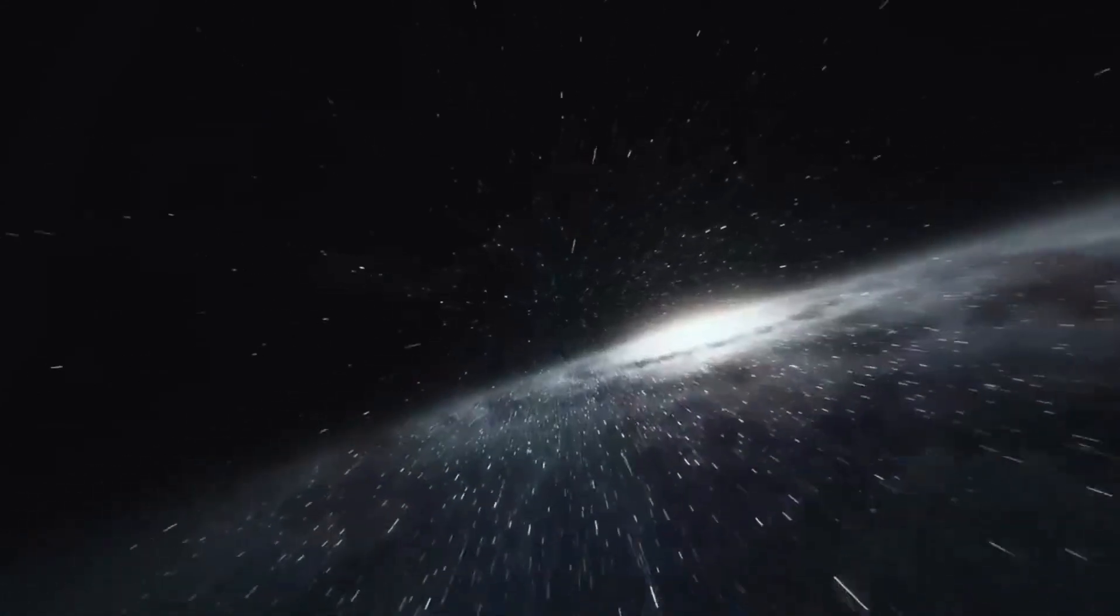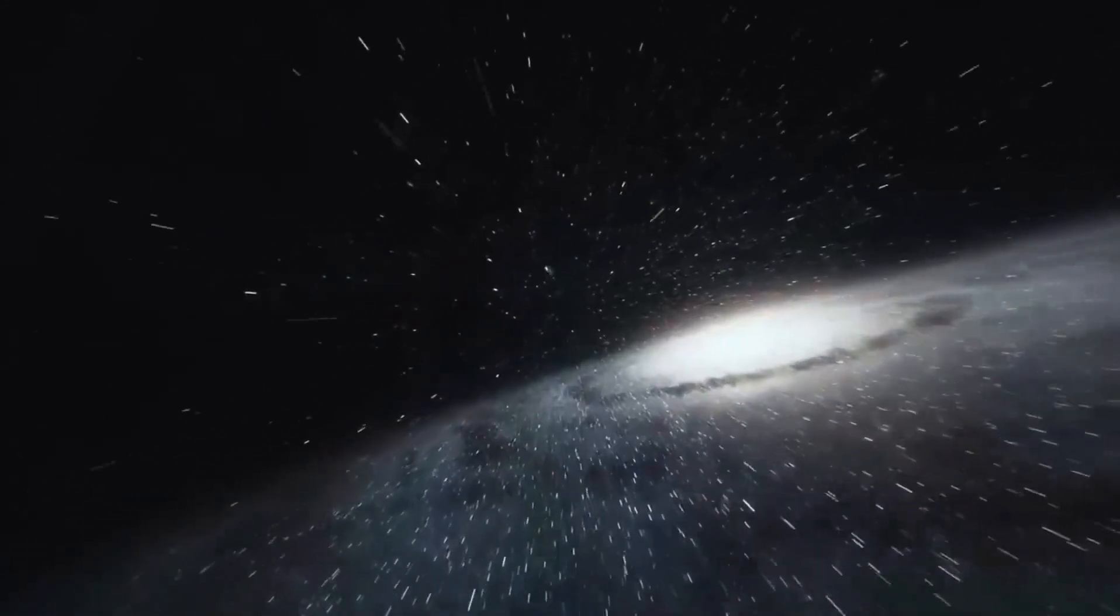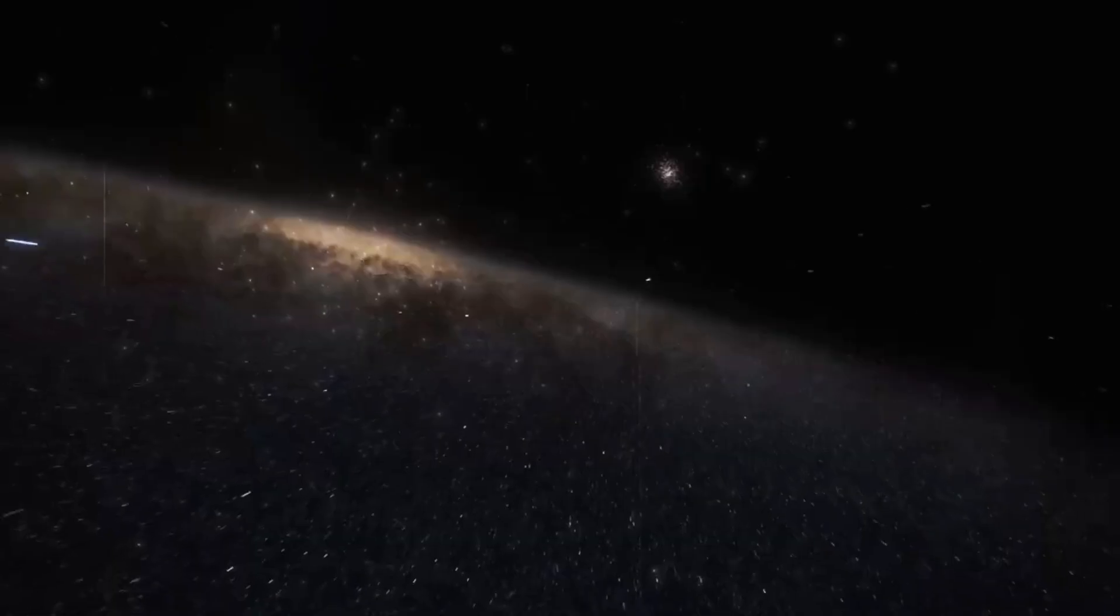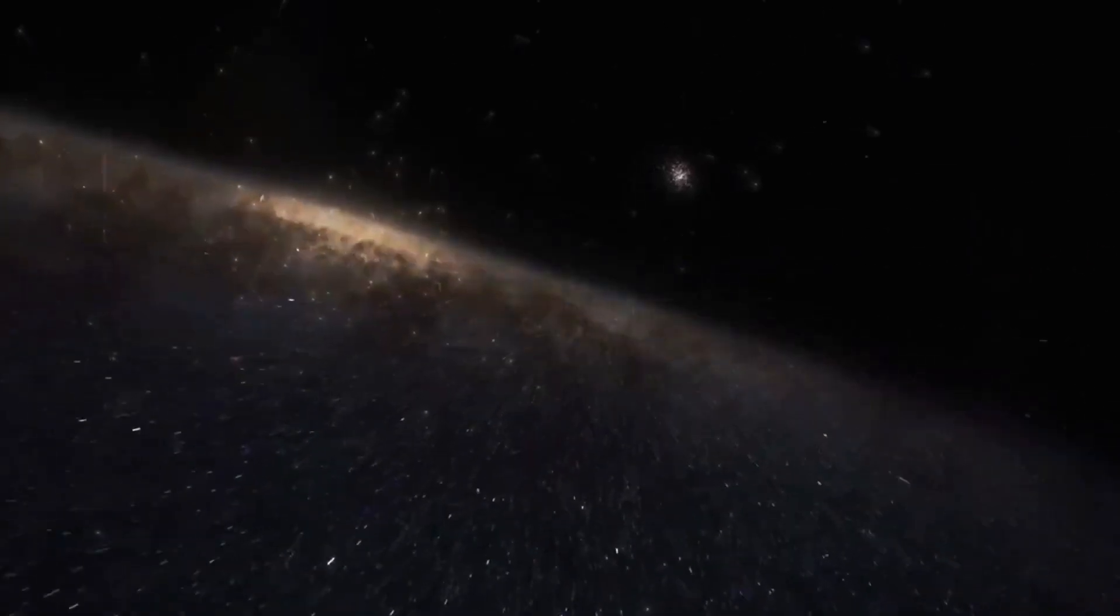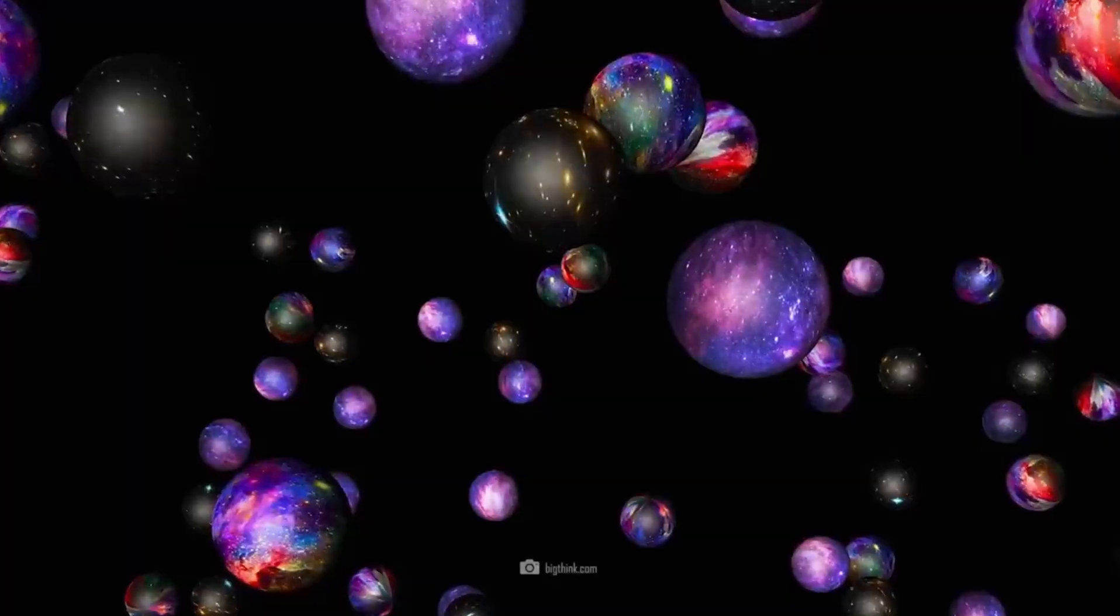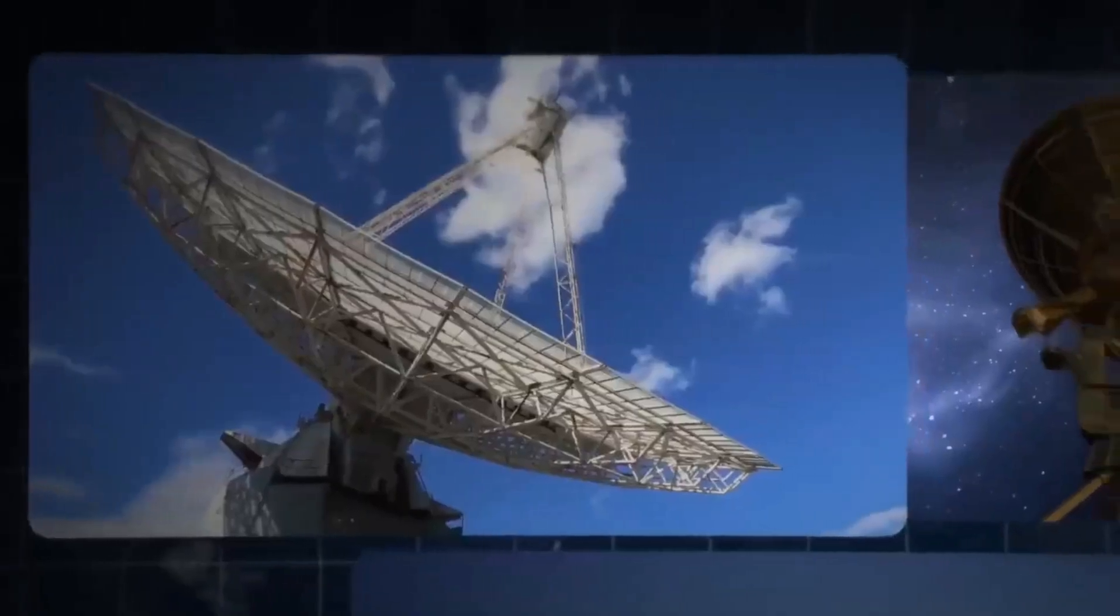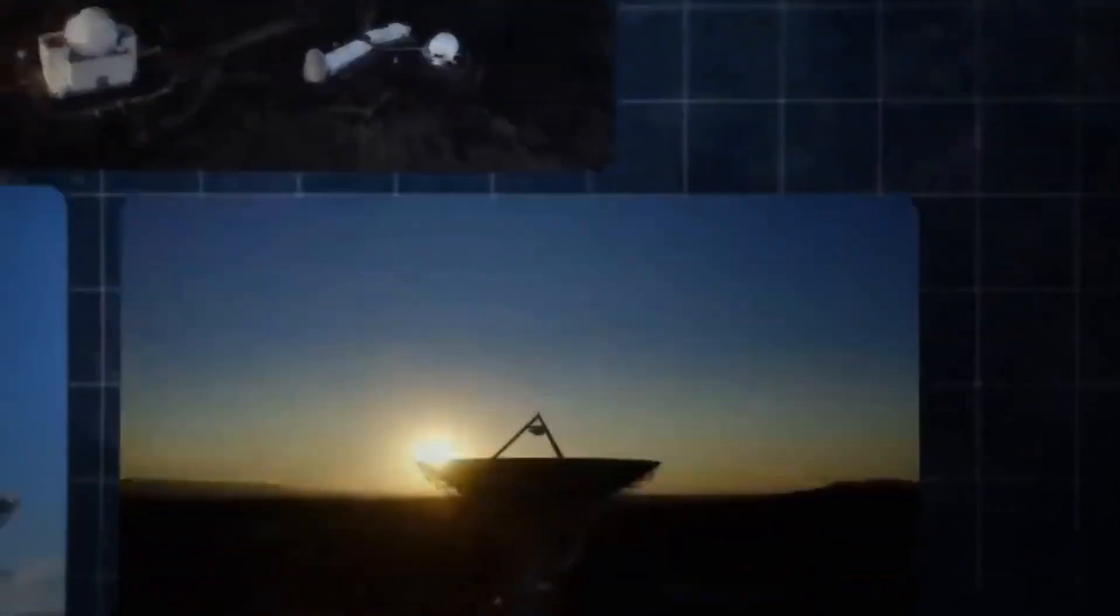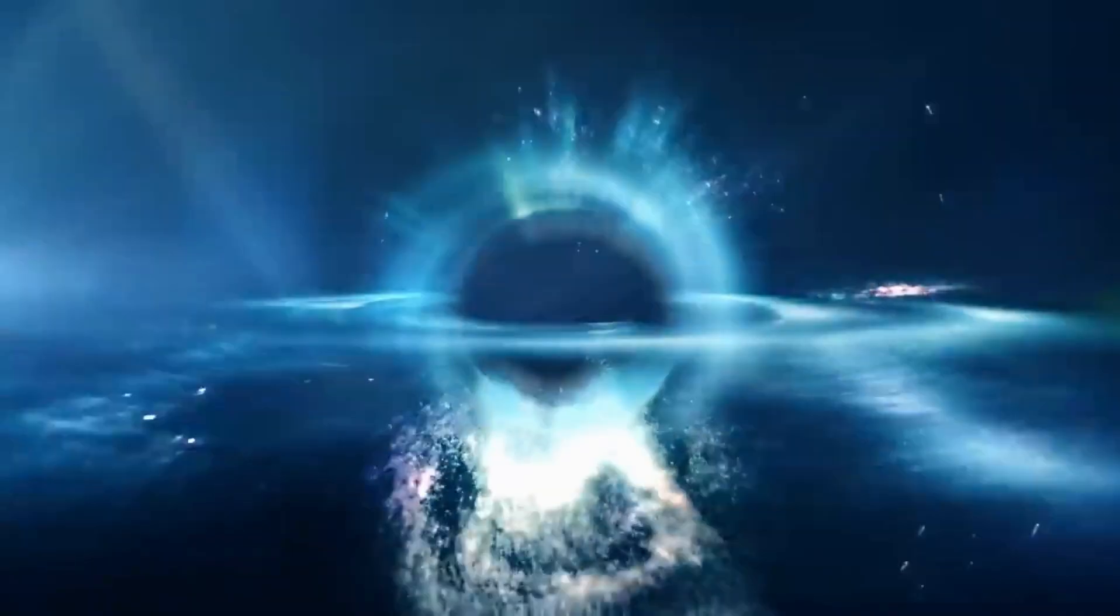Larger stars frequently burn through their hydrogen faster and die off sooner. Despite being only roughly 10 million years old, Betelgeuse is certainly nearing the end of its lifespan. Our sun, on the other hand, is still in its prime at approximately 5 billion years old. Furthermore, because Betelgeuse is nearing the end of its life, it's possible that a supernova will occur soon.